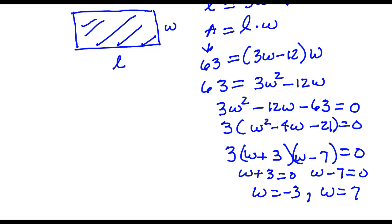Now because we're talking about dimensions of a rectangle, this solution here does not make sense for this problem. It might make sense for another problem, but not for this one because it's negative. So we're just going to throw that one out. The width of this rectangle is 7 meters.